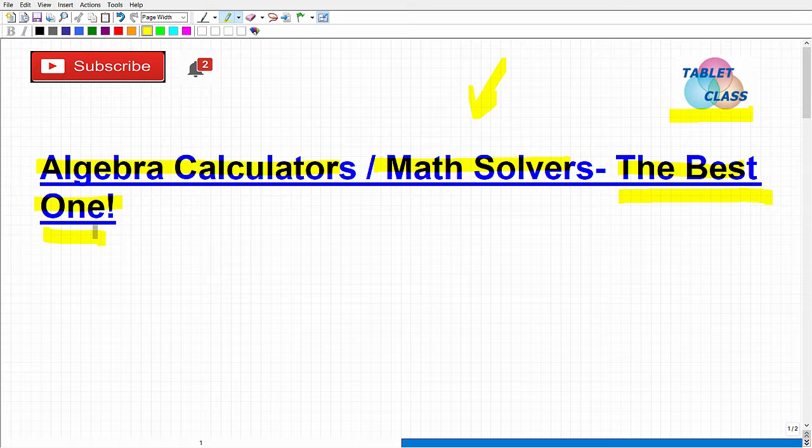In other words, hey, you're like get to the gist. What is the best one? So I'm going to tell you right now, the best one is your brain. That is the best calculator, the best math solver.